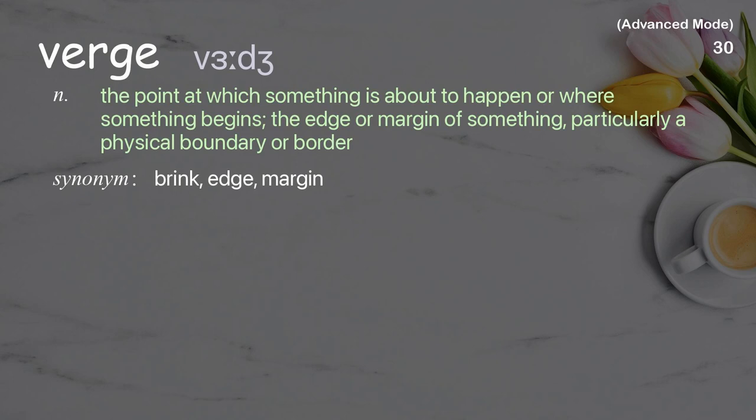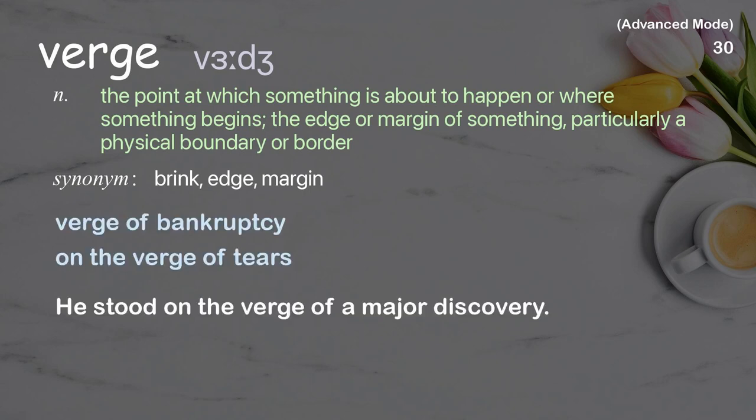Verge: the point at which something is about to happen, or the edge or margin of something, particularly a physical boundary or border. Examples: verge of bankruptcy. On the verge of tears. He stood on the verge of a major discovery.